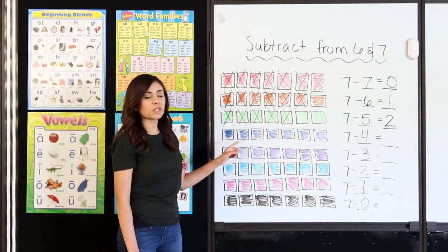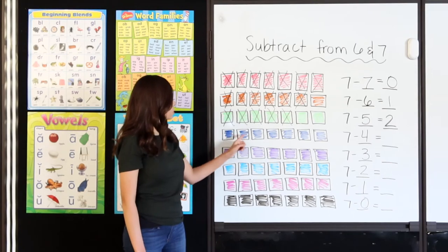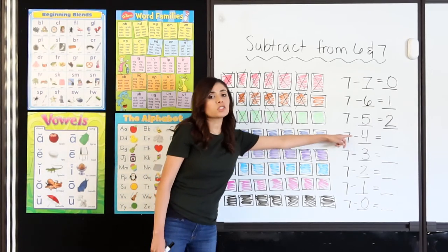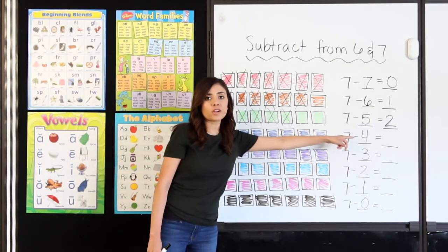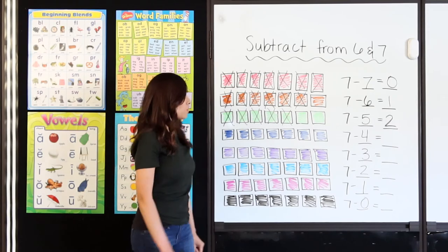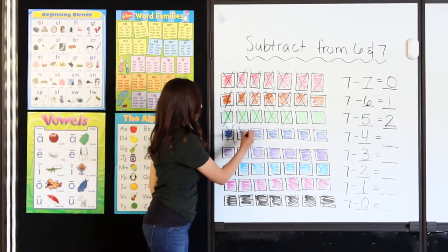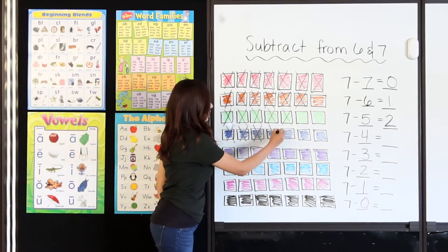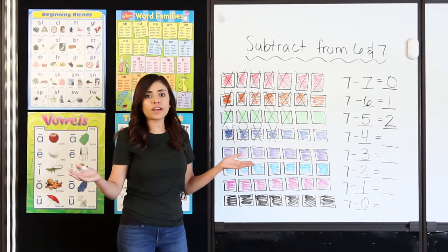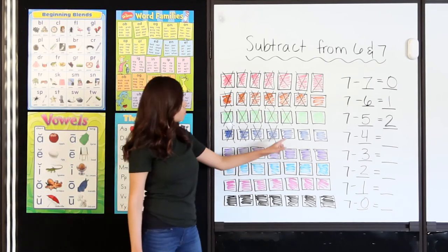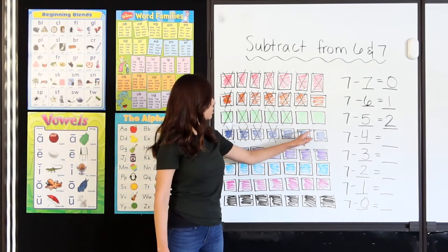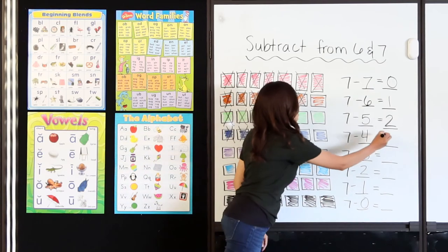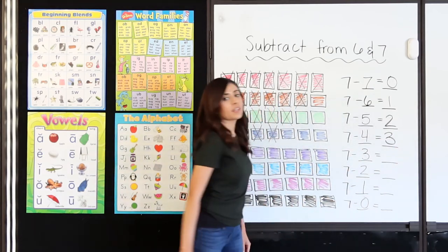I have 7 blue squares — 1, 2, 3, 4, 5, 6, 7. I'm going to cross off 4 that I'm taking away: 1, 2, 3, 4. How many squares do I have left? 1, 2, 3. 7 minus 4 equals 3. Excellent.